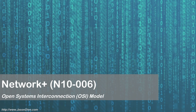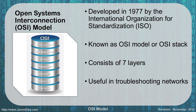We're going to cover the OSI model, which stands for the Open Systems Interconnection Model. This is probably the longest lecture that we have. The OSI model is what describes how our networks function. It was developed originally in 1977 by the International Organization for Standardization. You'll hear it referred to as the OSI model or the OSI stack. It consists of seven layers shown here on the left, and we're going to go through each of these layers.